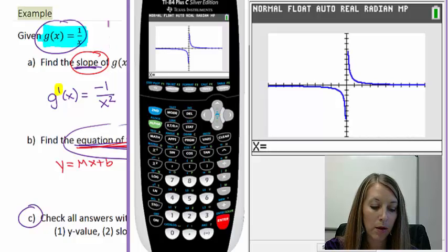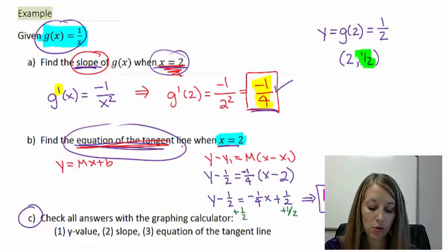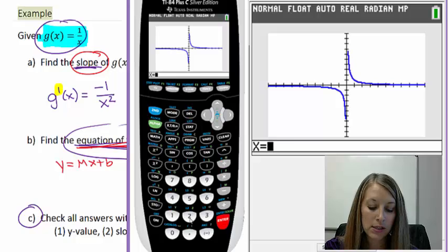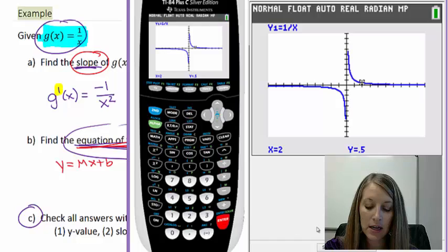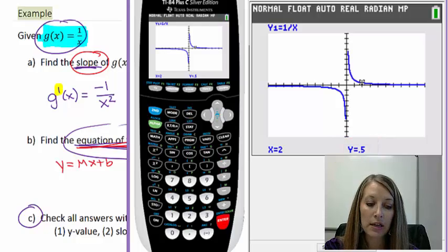In our problem, we have that our x value in question is 2. So we just need to substitute in 2 and select enter to select, and we see that y equals 0.5. Unfortunately, the calculator gives this to us as a decimal, but that's very easily converted.